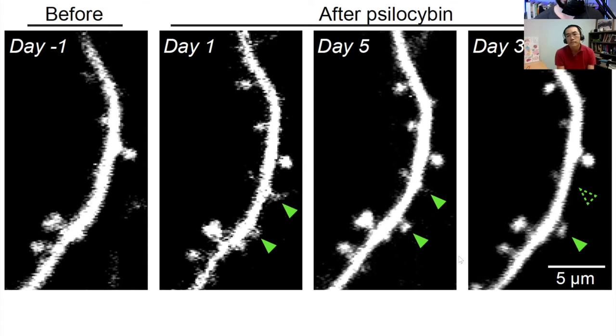So we've got these little blobs, these spines that represent connections to another neuron. Some of them are coming in, new spines, new synapses potentially are forming after psilocybin. We also have some leaving. What's the net effect of psilocybin in the mouse brain? Is it to create more connections or fewer connections?